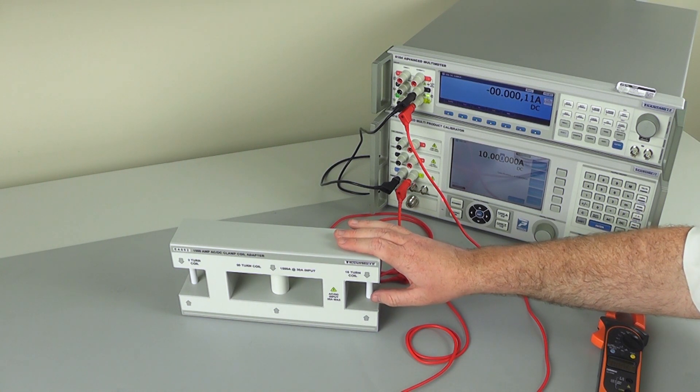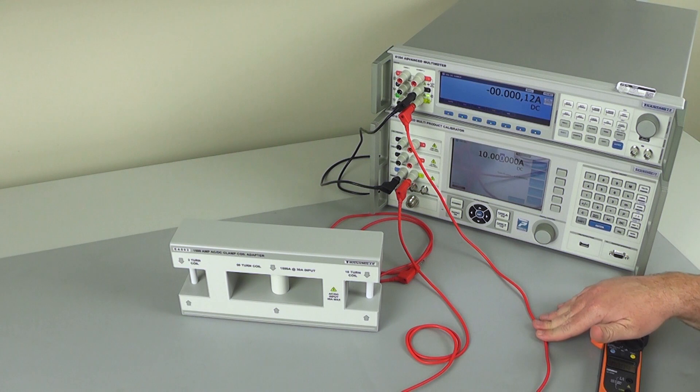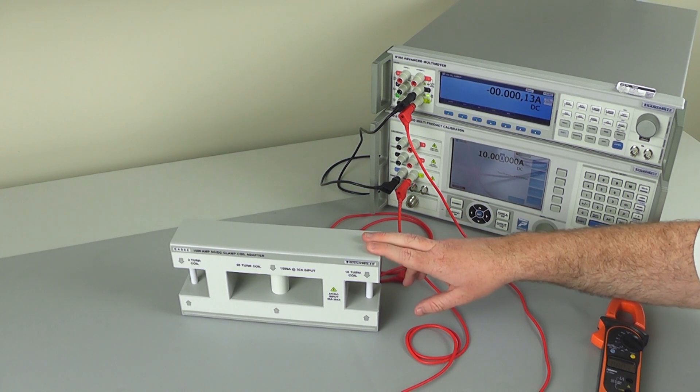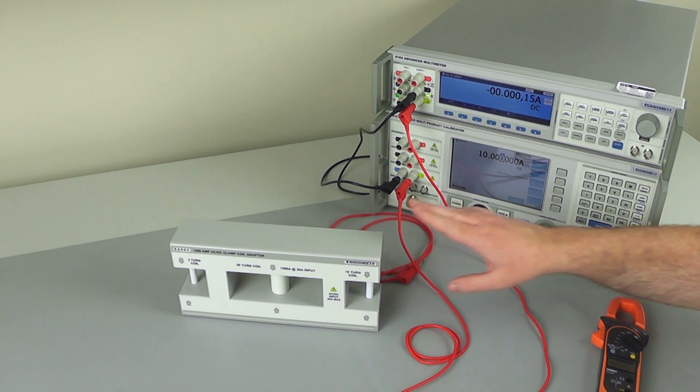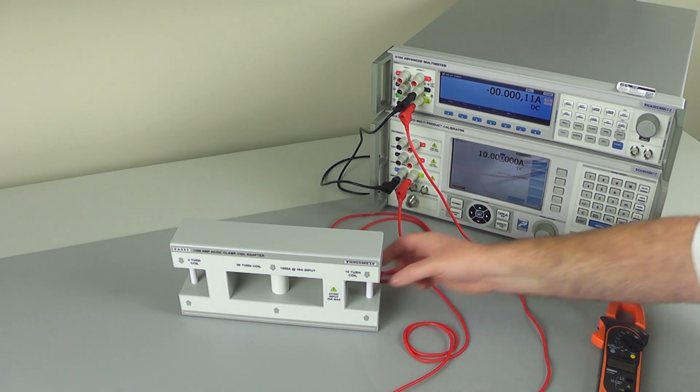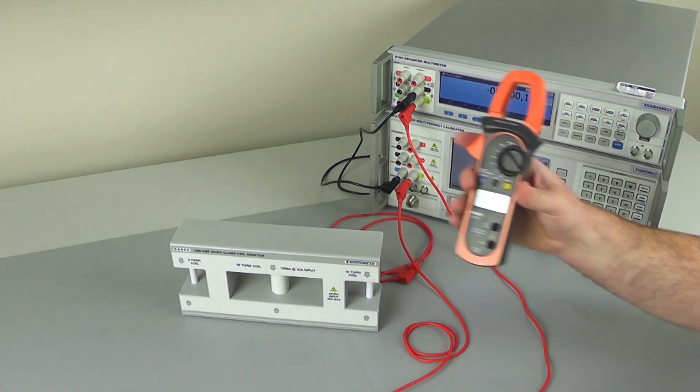But what we can do is we can use a process of verifying the current in the single conductor, then reducing that current by the proposed multiplier. So we're going to do 10 turns in this example, verify the lower current and then check the multiplier using the clamp meter that we've just verified.